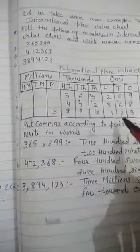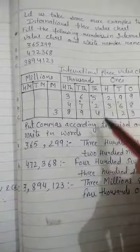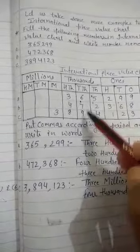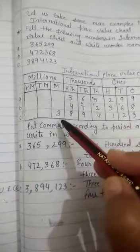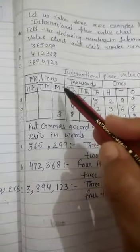3 ones place, 2 tens place, 100 place, 4000, 9, 10,000, 800,000 and 3 comes in the millions.